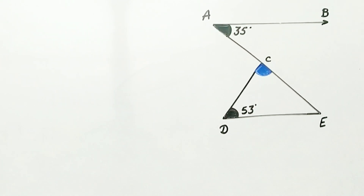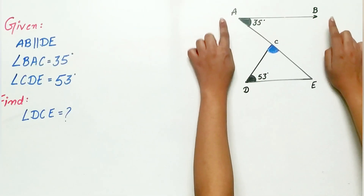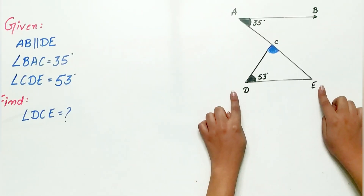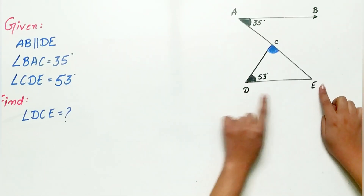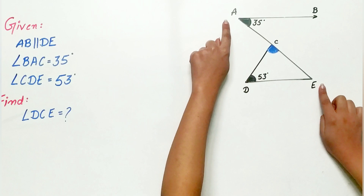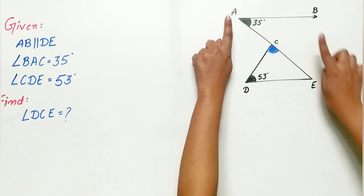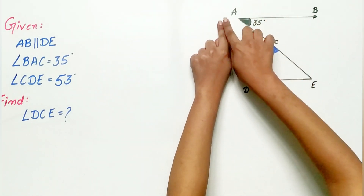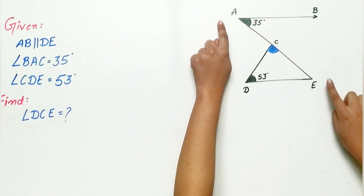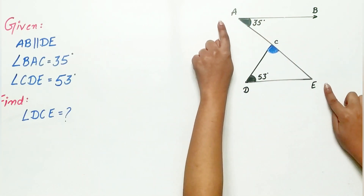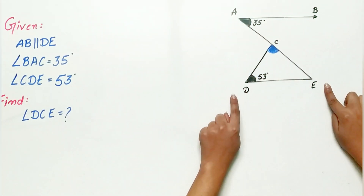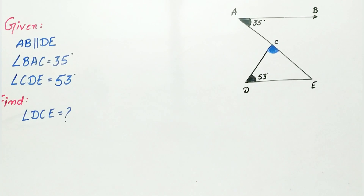Now look carefully. AB is parallel to DE, and AE is a transversal. Hence, angle BAE is equal to angle CED — because of alternate interior angles.